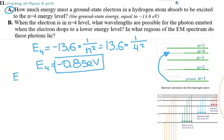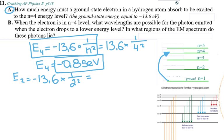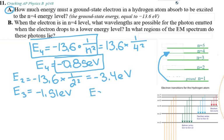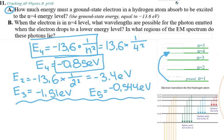Using the same formula: E₂ = −13.6 × (1/4) = −3.4 eV. E₃ = −13.6 × (1/9) = −1.51 eV. E₅ = −13.6 × (1/25) = −0.54 eV. So these are all the energy levels for the hydrogen atom at the given levels.